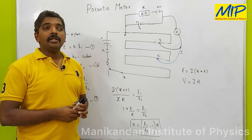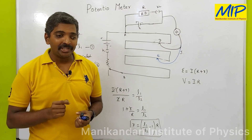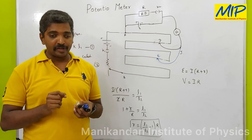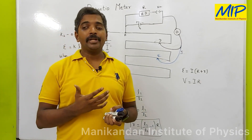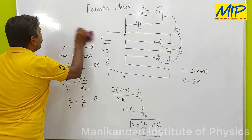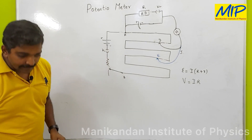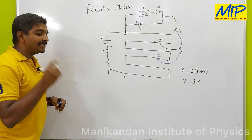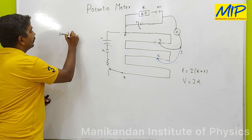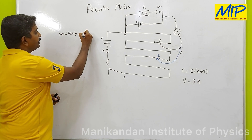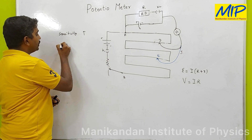Why do we prefer a potentiometer over a voltmeter? A potentiometer is a highly sensitive device which can measure very small potential differences. To increase the sensitivity of the potentiometer, we should decrease the potential gradient. So: sensitivity increases when the potential gradient K decreases.